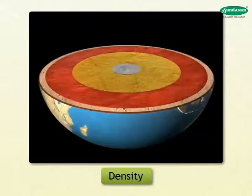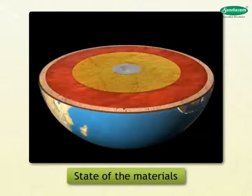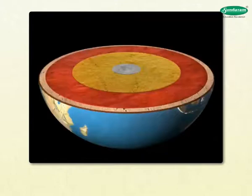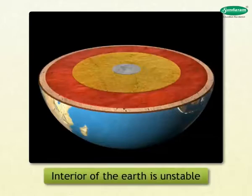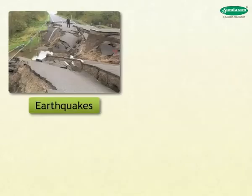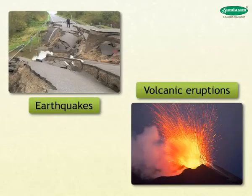The study of earthquake waves has helped in determining the different layers of the interior and their boundaries. There are considerable differences in the temperature, density, and state of the materials in the interior of the Earth. These differences give rise to a number of movements. By this we can conclude that the interior of the Earth is unstable, and this is the reason earthquakes and volcanic eruptions occur.